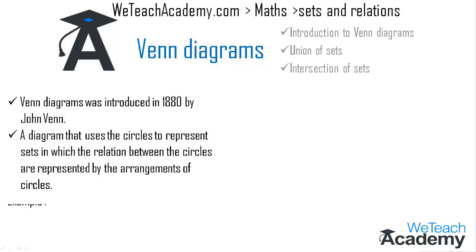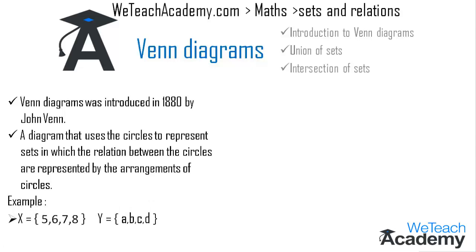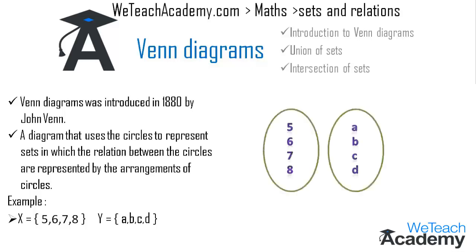Let me explain this concept with the help of an example. Here we have the elements of X as 5, 6, 7, 8 and the elements of Y as a, b, c, d. Now let us represent this in the form of a Venn diagram. We have written the elements of X in one circle and the elements of Y in the other circle.